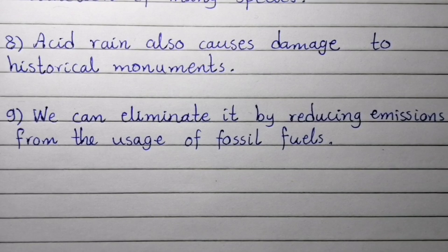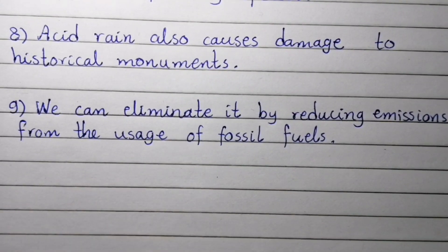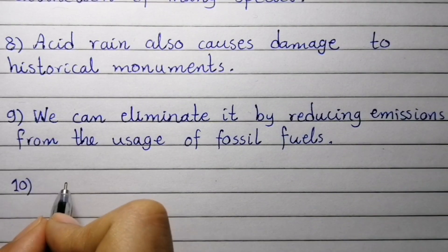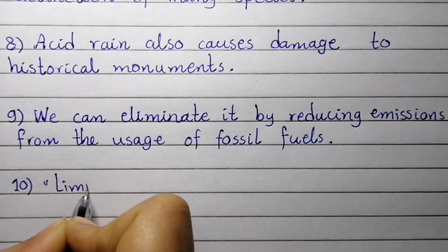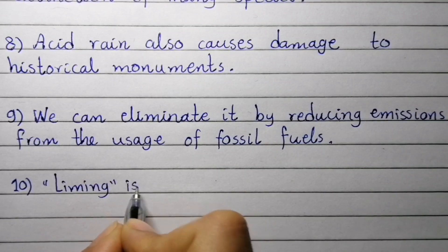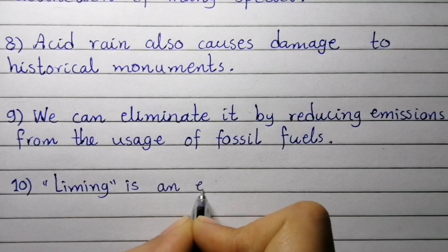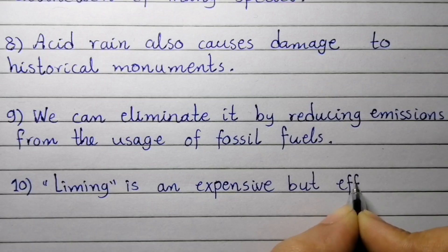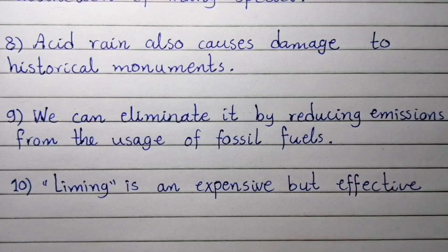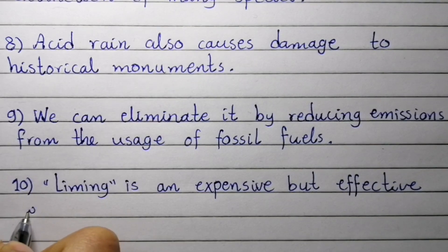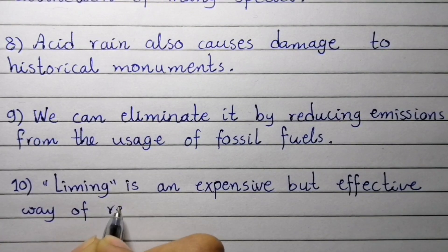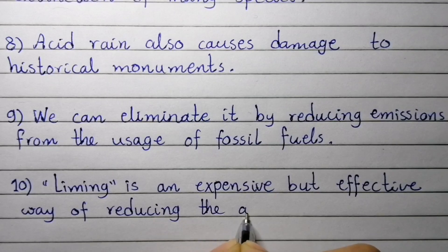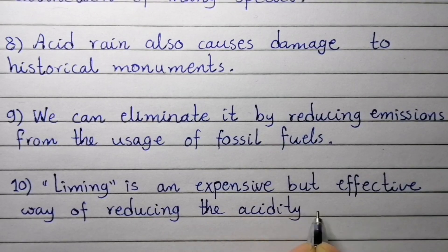Point number ten: liming is an expensive but effective way of reducing the acidity of water bodies.